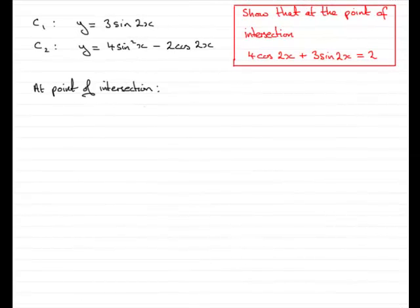Now in this part of the question, we're given the two curves C1 and C2. C1 is such that y equals 3 sine 2x, and C2 is such that y equals 4 sine squared x minus 2 cos 2x.